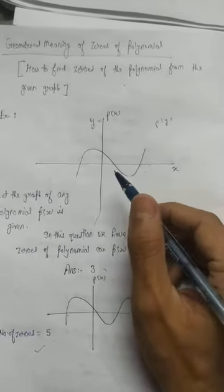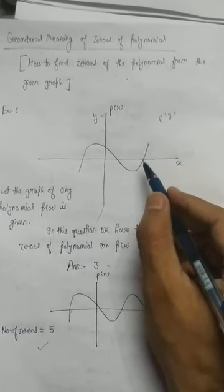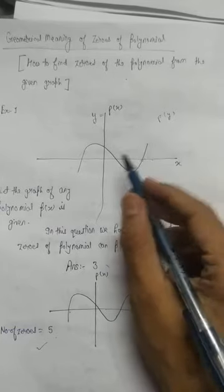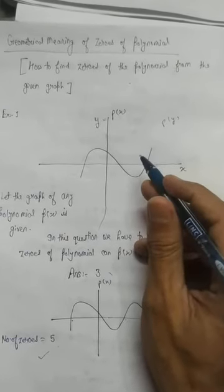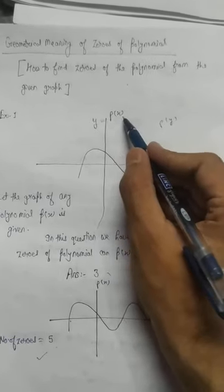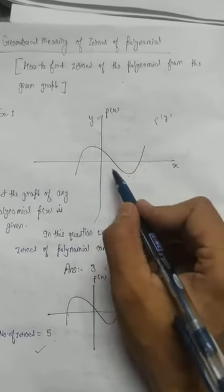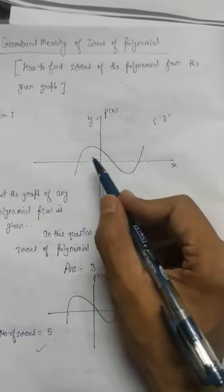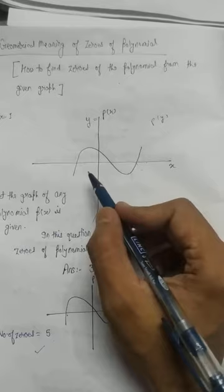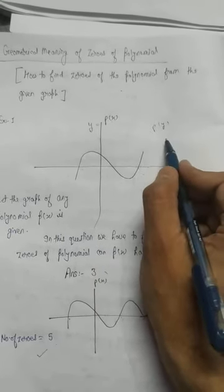Now the question arises: why are we looking only at the x-axis and not the y-axis? The reason is that because the polynomial is given in x, we will see only on the x-axis how many times the graph intersects it.